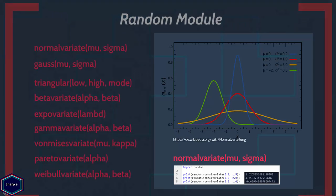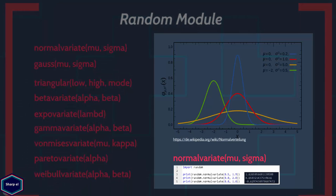The normal distribution is the most important and most widely used distribution in statistics. The normal distribution approximates many natural phenomena so well, such as rates, heights, and weights.